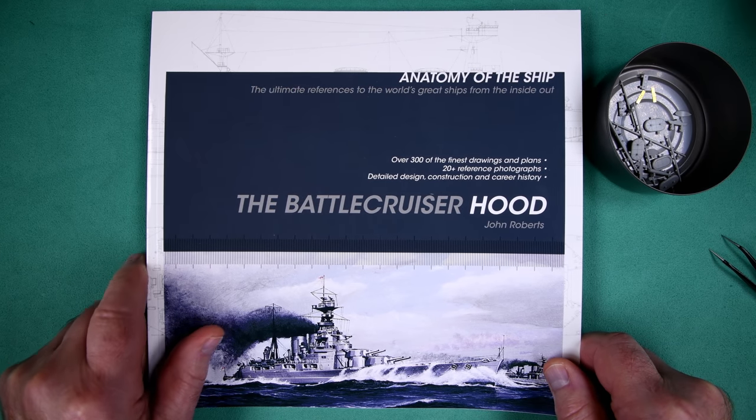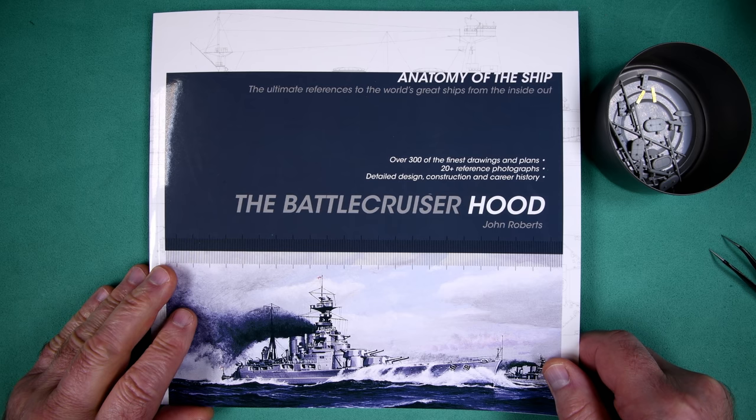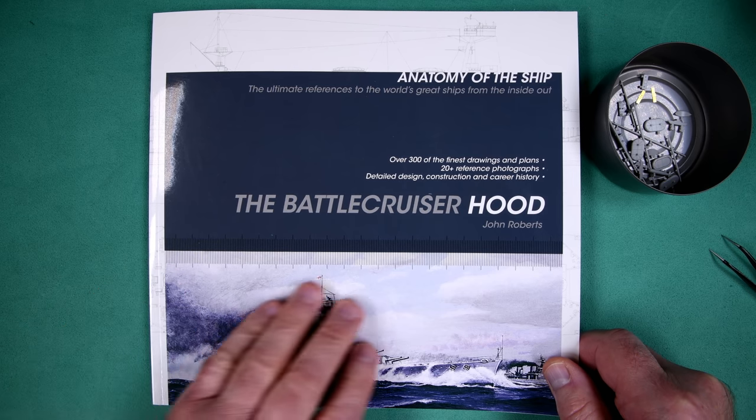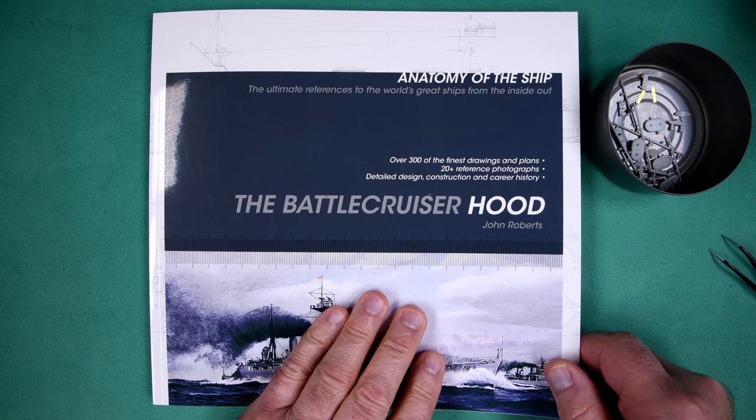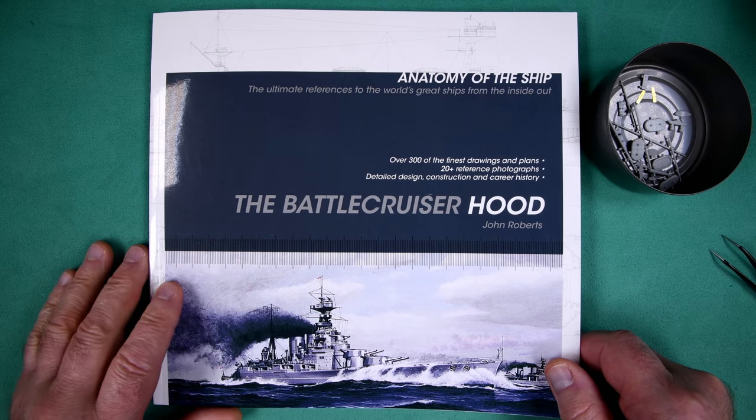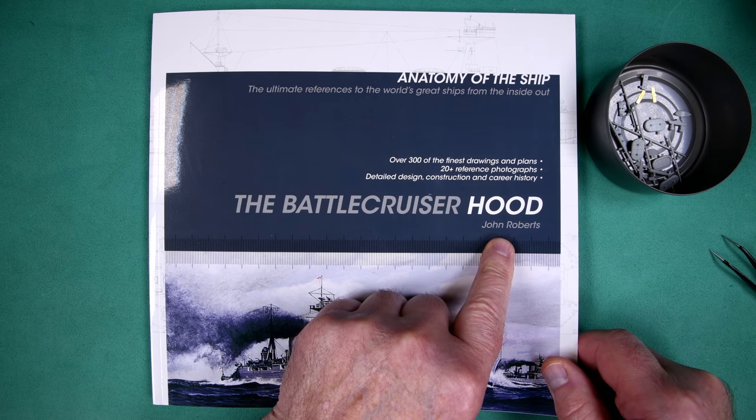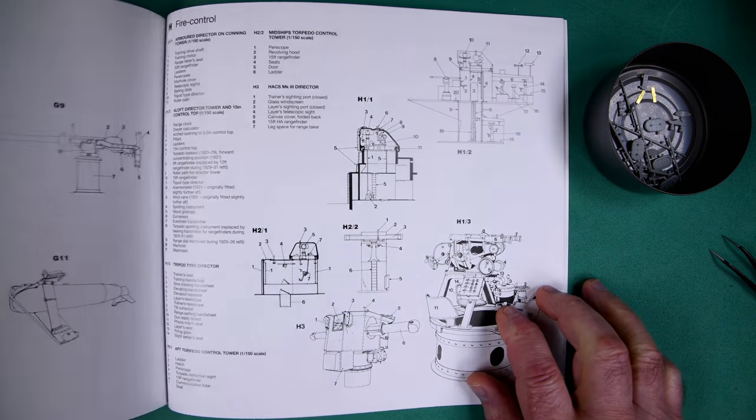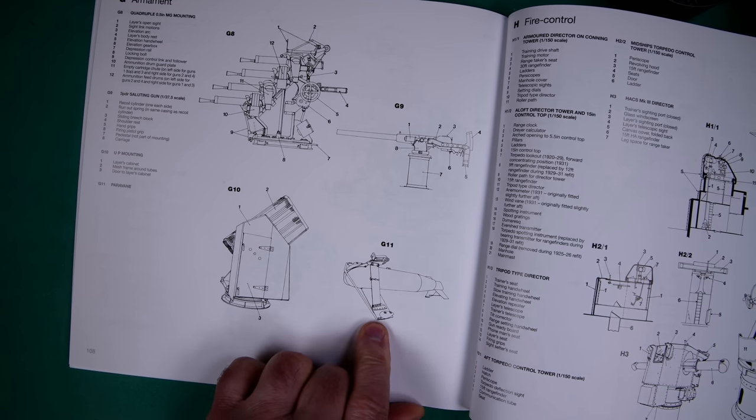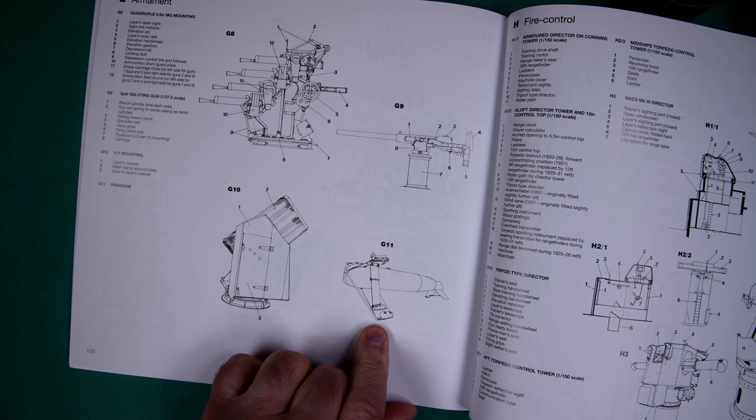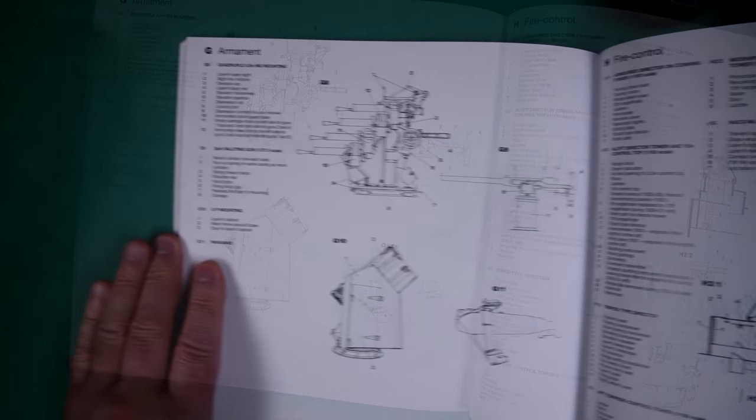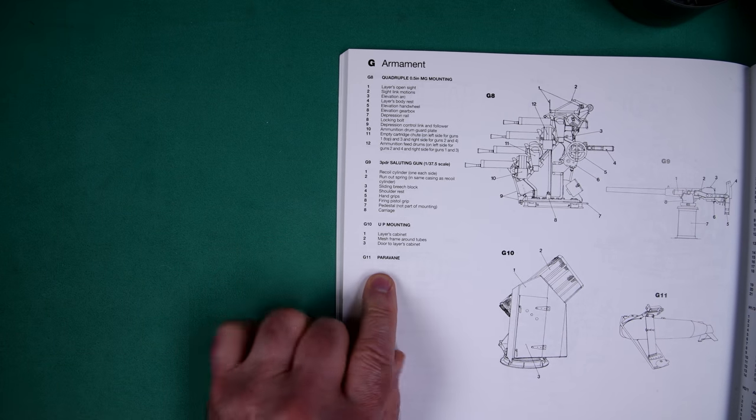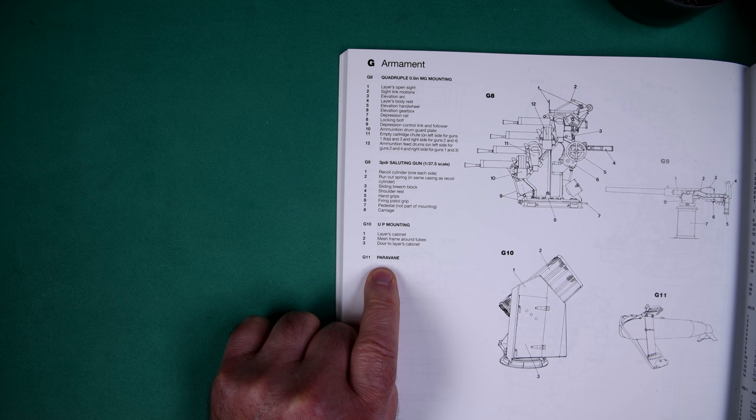Maybe what we should do is stop poking at it and go and find a photograph of the real thing if we can. Sometimes when you can see a photograph and you know how it's supposed to go, all of a sudden it sort of makes sense. I can't find any photographs. It appears that the Bismarck was photographed a lot better than the Hood was. Maybe the Germans were more into photography than the English. There's got to be photos out there somewhere of what we're looking for, but maybe there's not. If we take our book from John Roberts here and flip it open to page 108, here is a drawing of that thing. It is a G11, it's called a para vane.